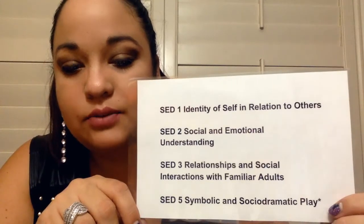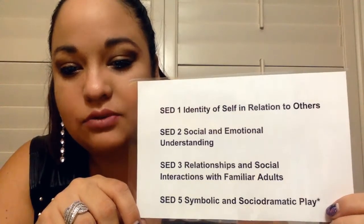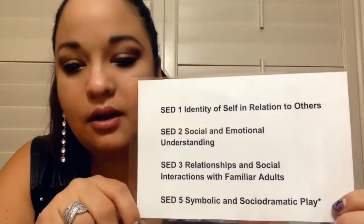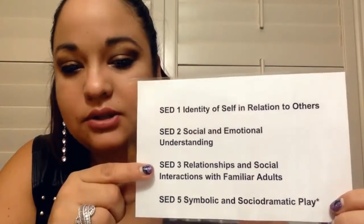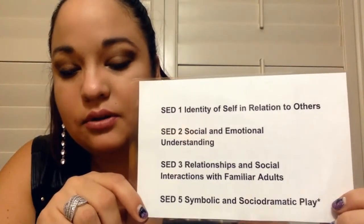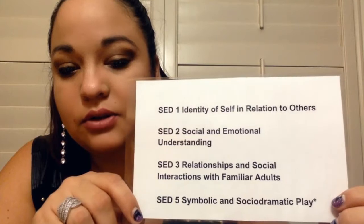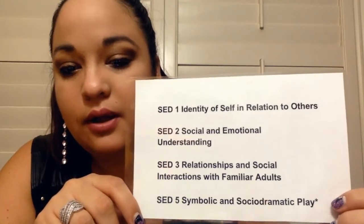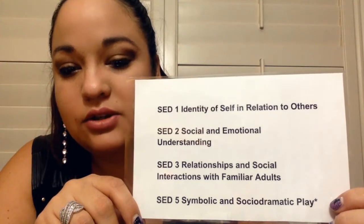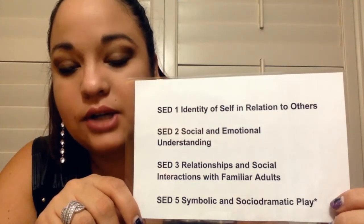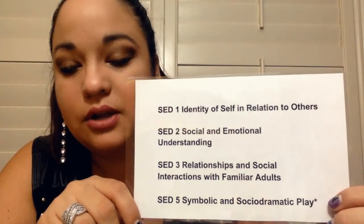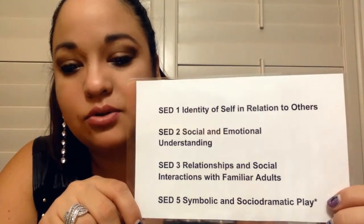The next one is social-emotional development three: relationships and social interactions with familiar adults. This can be with a student's teacher as well as other family members and adults that children know. This is a goal for preschool-age children — that they form secure attachments and relationships with adults around them and are able to socially interact.